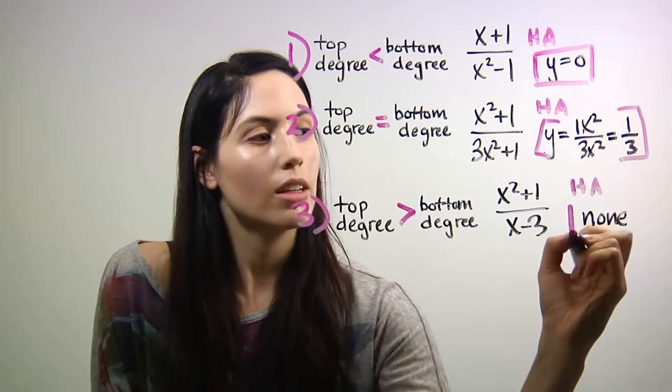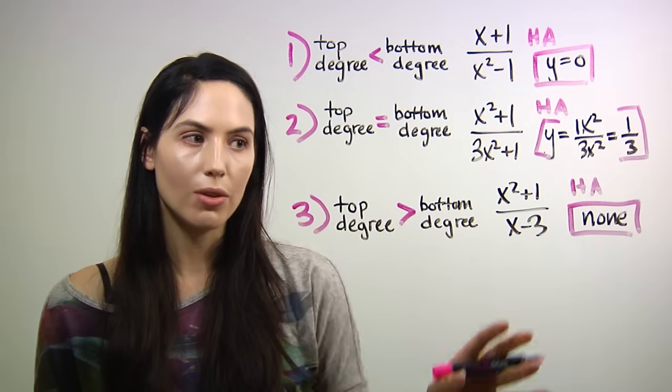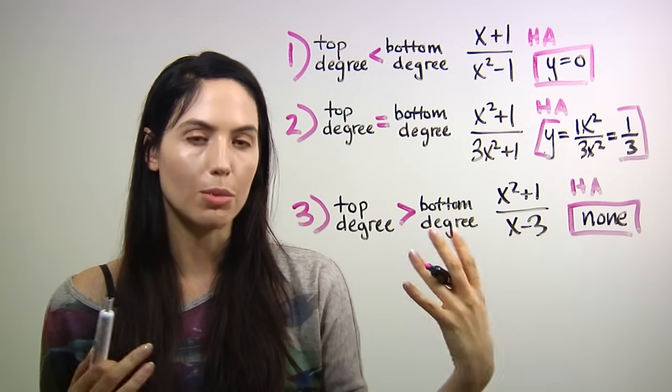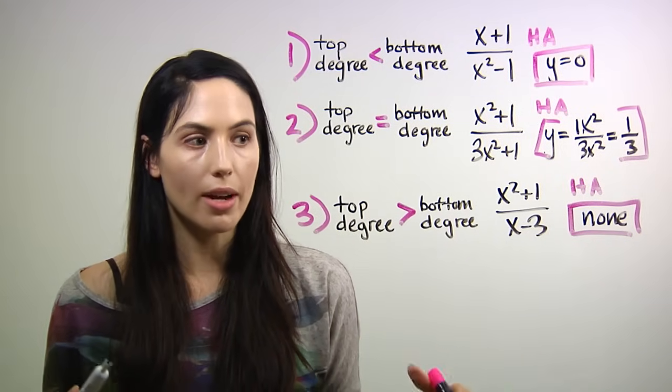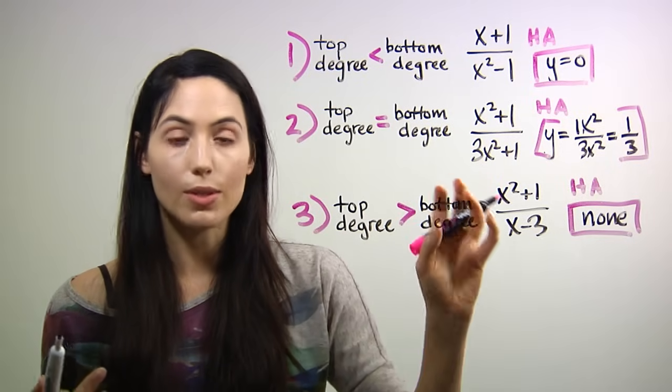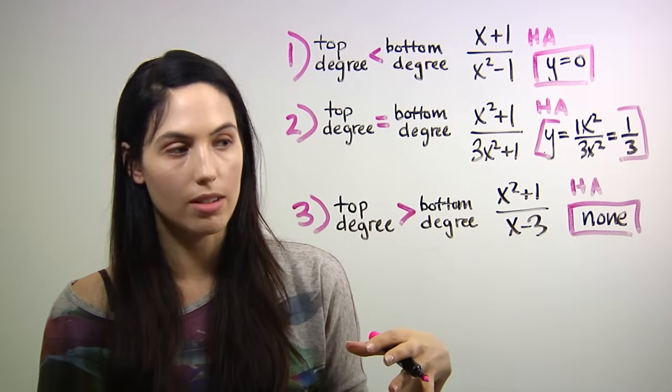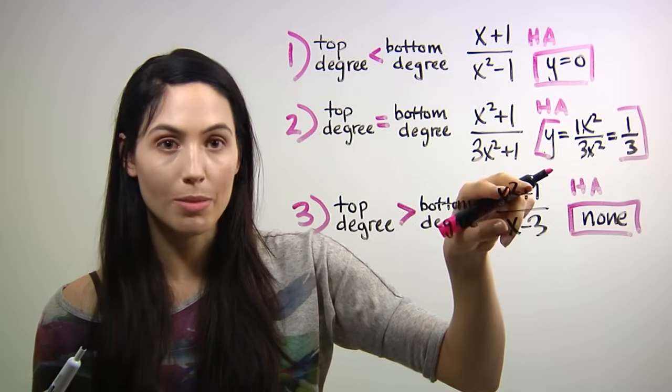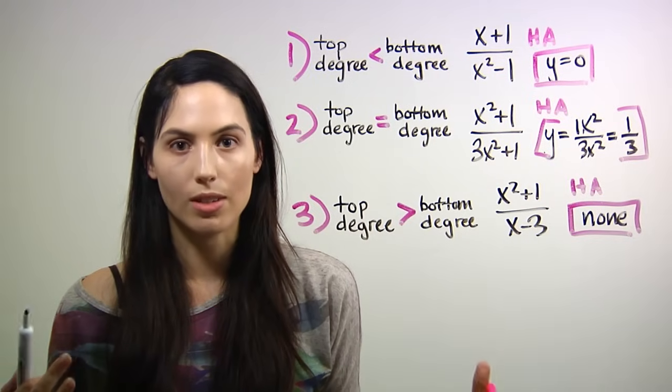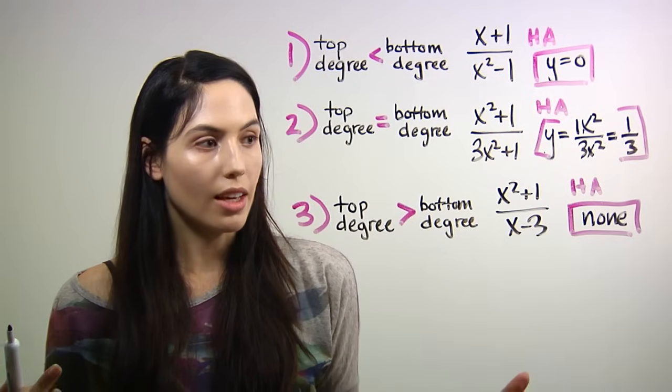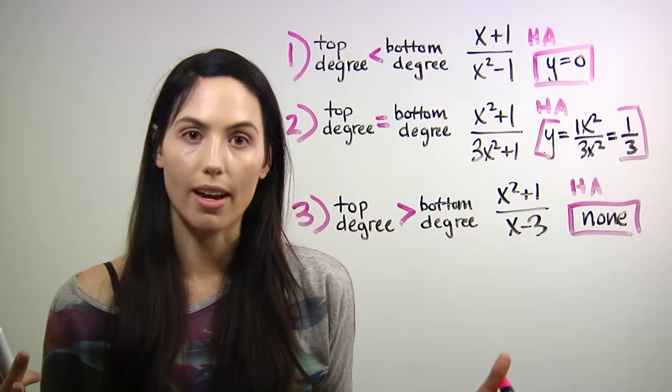Now, in reality, you do have an asymptote in this case, but it's something called an oblique asymptote or a slant asymptote, and you would actually get it by using long division with polynomials, which I have a video for on how to do. You would divide this polynomial by that polynomial, and you would end up with another x expression using long division. And that would be your slant asymptote or your oblique asymptote.